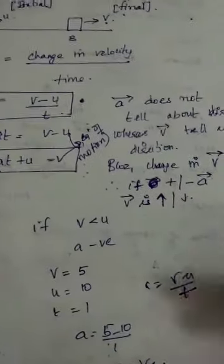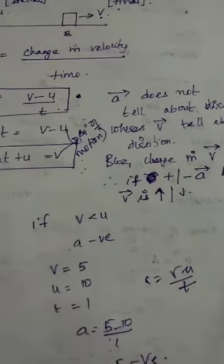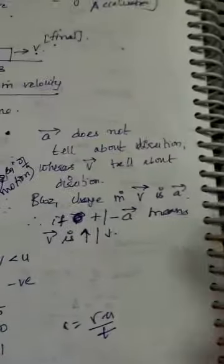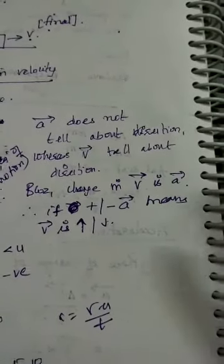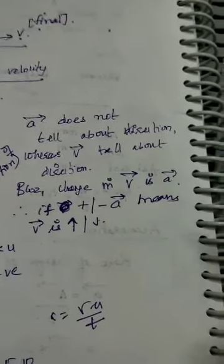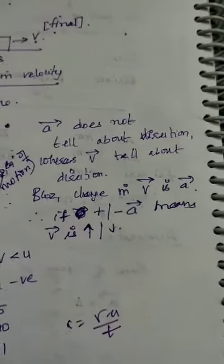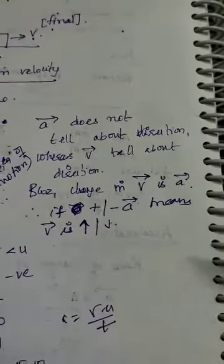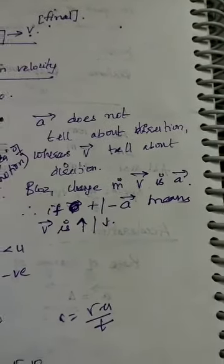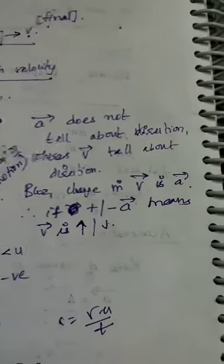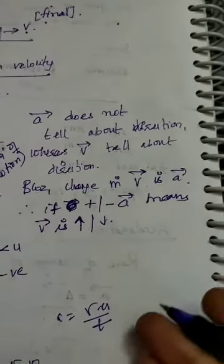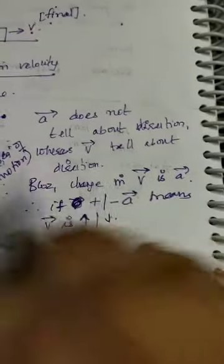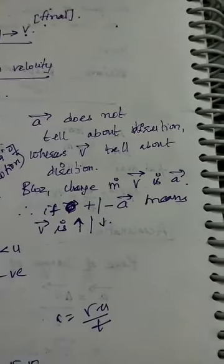When v is less than u — for example v = 5, u = 10, t = 1 — then a = (5 − 10) / 1 = −5, which is negative. So based on this condition we can get positive acceleration as well as retardation. If velocity is increasing, the quantity is positive; if velocity is decreasing, the quantity of acceleration is negative.